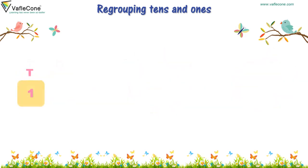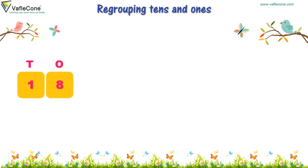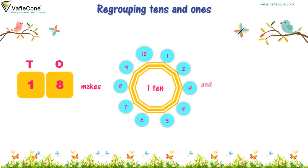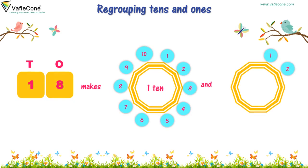One, eight — eighteen makes one ten and one, two, three, four, five, six, seven, eight. Eight, one.